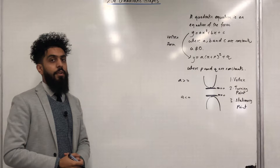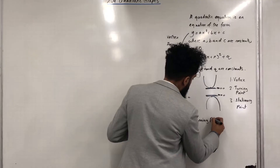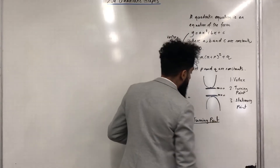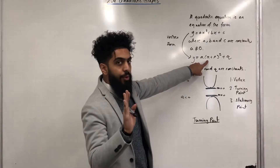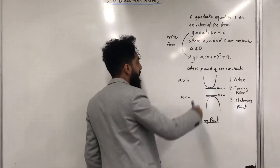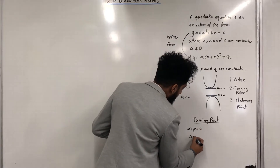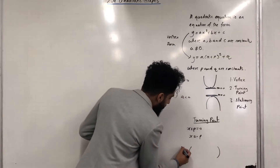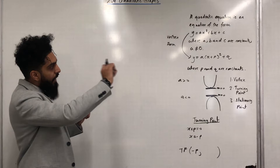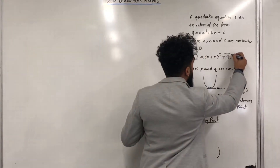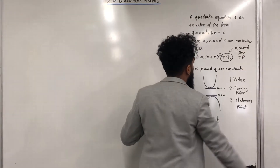How do we find the coordinates for the turning point? We go back to the vertex form. The x-coordinate is calculated by setting whatever you have inside the bracket equal to 0: x + p = 0, giving x = −p. So the x-coordinate for the turning point (shorthand TP) is −p. The y-coordinate is whatever you have on the outside, which in this case is q.